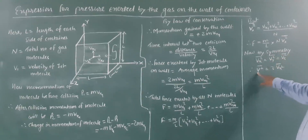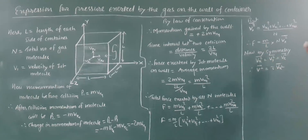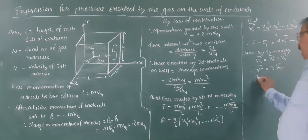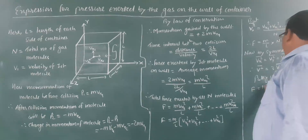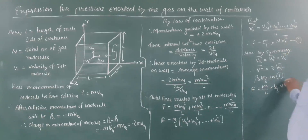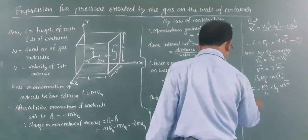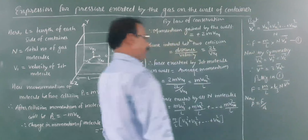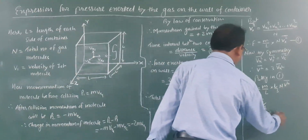Therefore, Vx²bar can be replaced by V²bar/3. The total force becomes F = (mN/L) × (1/3) × V²bar. Pressure is force divided by area. The area of the wall is L², so pressure P = F/L² = (1/3)(mN/L³) × V²bar.